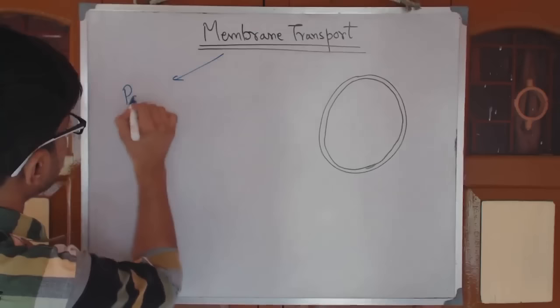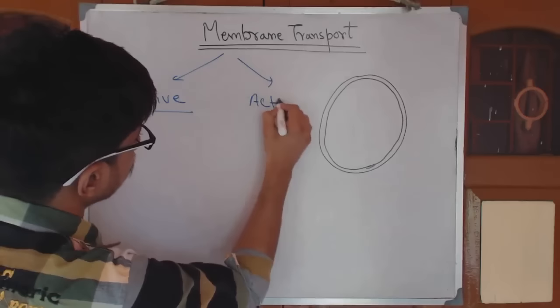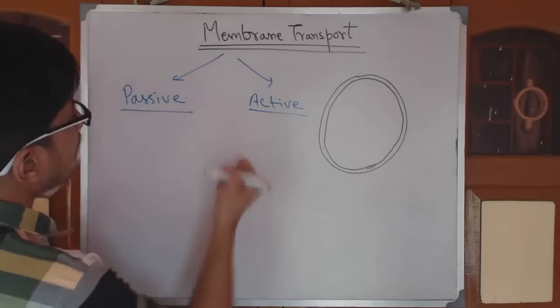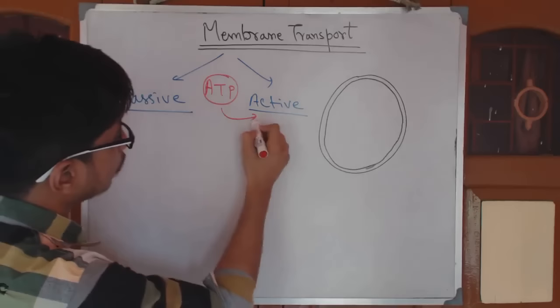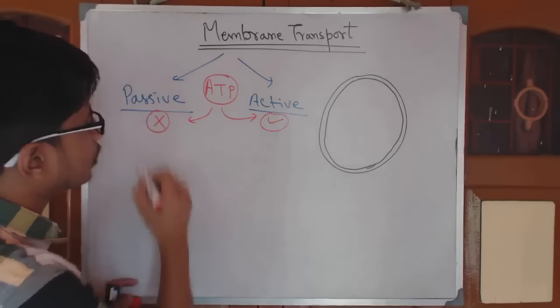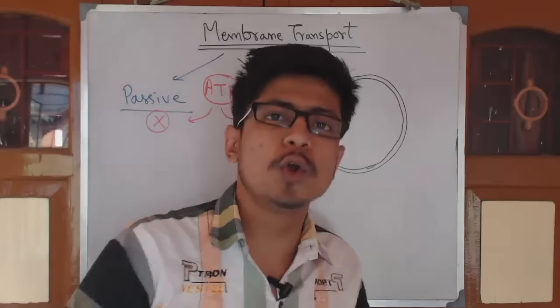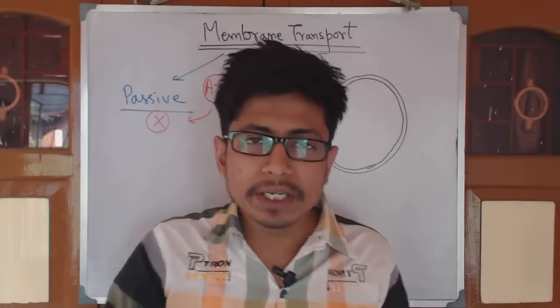Membrane transport is divided into two major parts: passive transport and active transport. We differentiate them based on the requirement of energy — ATP, the energy currency of the cell. Transport that requires energy is active transport; transport that does not require energy is passive transport.